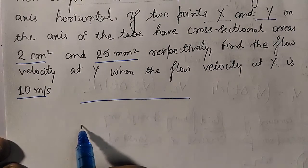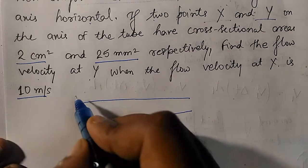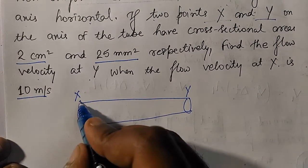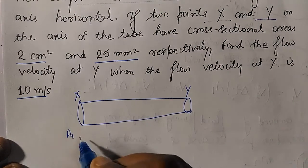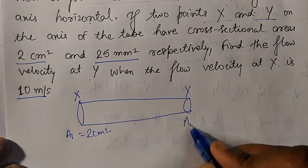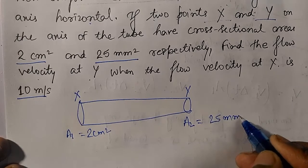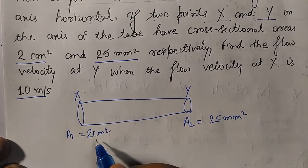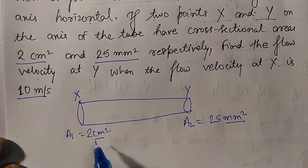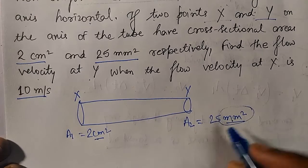This is a cross-sectional area of 2 cm². We need to convert units — we'll work in centimeter square, so let's convert 25 mm² to cm².